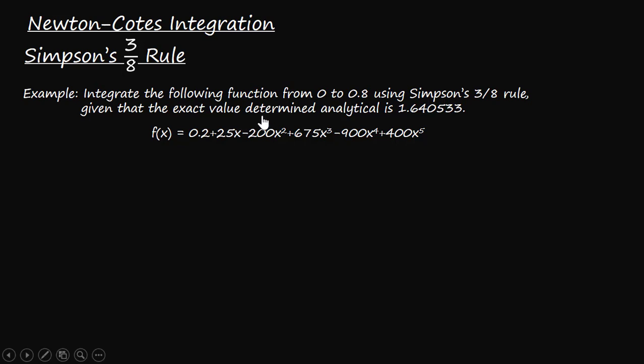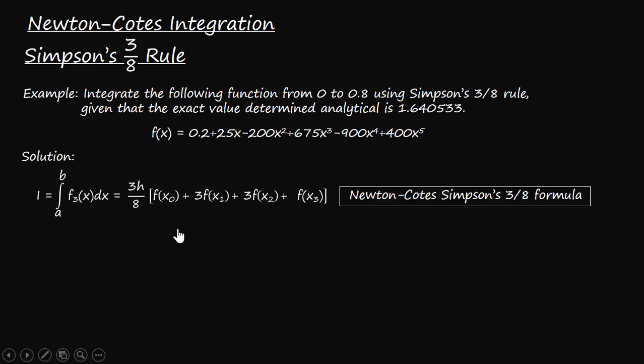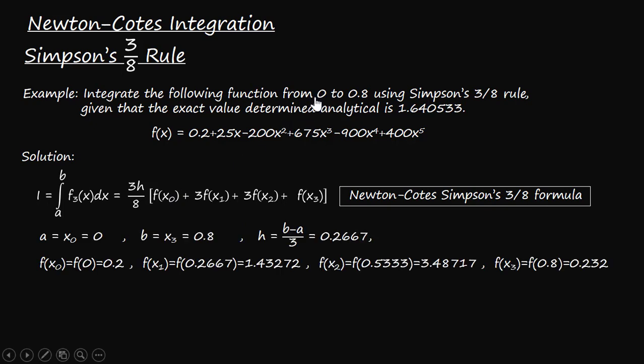We are also given that the exact integration of this function from 0 to 0.8 is 1.640533. Writing down the formula of Newton-Cotes Simpson's three-eighth rule, that is 3h upon 8, f(x_0) plus 3 times f(x_1) plus 3 times f(x_2) plus f(x_3). Now here the value of x_0, that is equals to a, which is the first point, that is equals to zero. The last point x_3 equals to b, that is equals to 0.8.